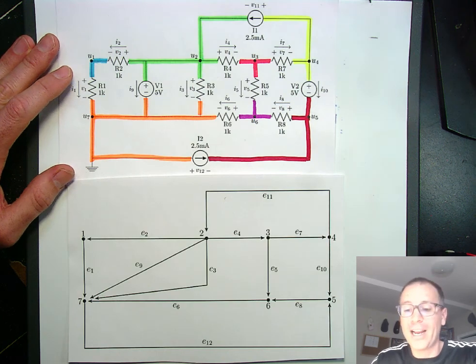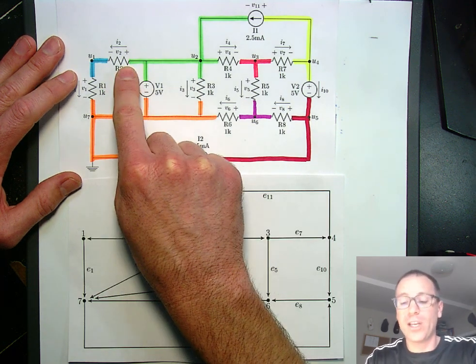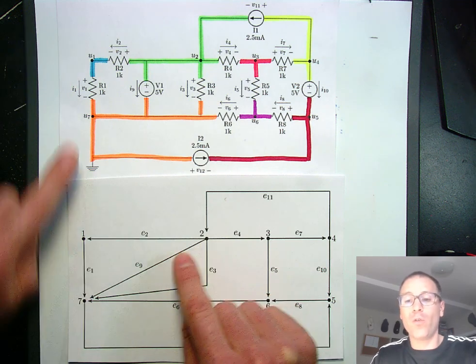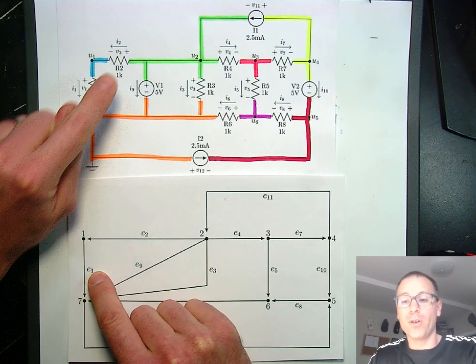The next thing that we'll do is impose a directed graph model that encodes the individual current reference direction. When we do this, we're going to count for each element of our circuit, we assign one edge. So for resistor 1, we say that that's edge 1.